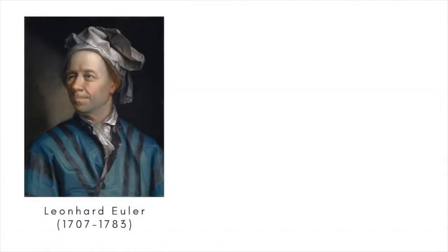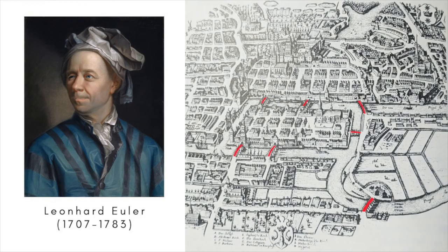The first mathematician to do a thorough analysis of unicursal mazes was the prolific Swiss mathematician Leonard Euler in the mid-18th century. His interest in the subject stemmed from an answer he presented to the St. Petersburg Academy in 1736 to the problem of the bridges of Königsberg. The question was whether it was possible to walk from anywhere in the East Prussian town of Königsberg, present-day Kaliningrad in Russia, and cross every bridge there exactly once before returning to the starting point.